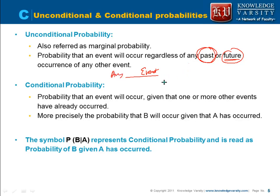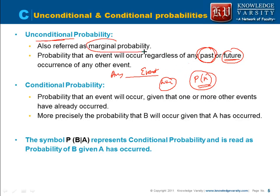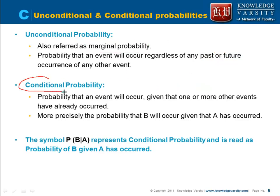What if there is a war between two countries — does the probability of head become different? No, it is not dependent on any other thing in the past. That is your unconditional probability, also known as the marginal probability. Conditional probability is the probability that an event is going to occur given that one or more other events have already occurred.